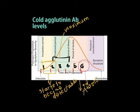Cold agglutinin antibody levels are often detectable by the end of the first or second week of the disease, increasing to their maximum by the second to fourth week, and decreased or absent by the sixth week.